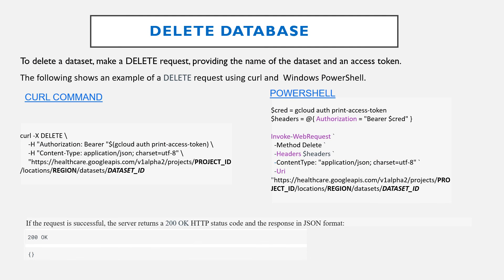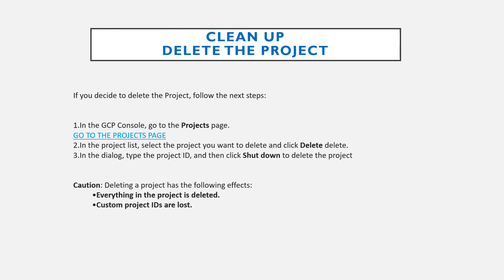You can also perform a delete database operation. To delete a dataset, make a DELETE request providing the name of the dataset and an access token. The following shows an example of a delete request using curl and Windows PowerShell. You can also see how to clean up or delete the project. If you decide to delete the project, in the GCP console go to the project page, select the project you want to delete, and click delete. In the dialog, type the project ID and then click Shutdown to delete the project.